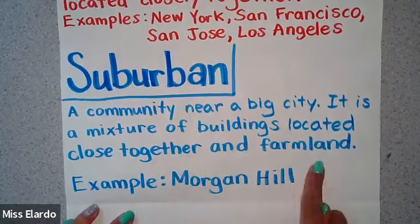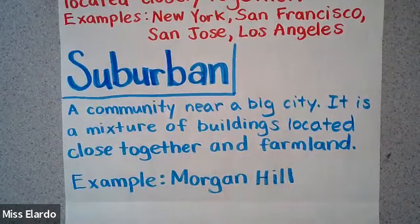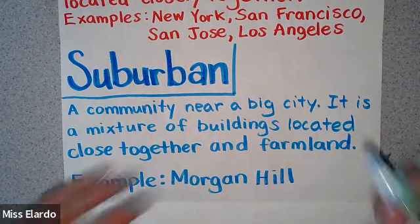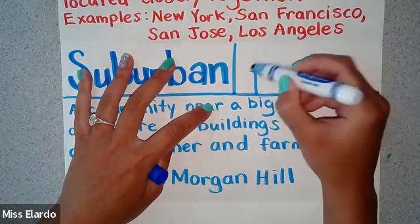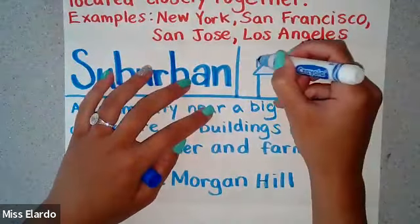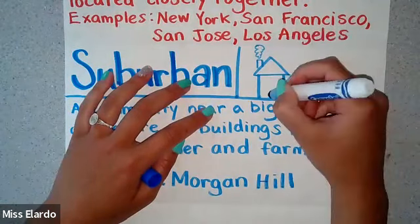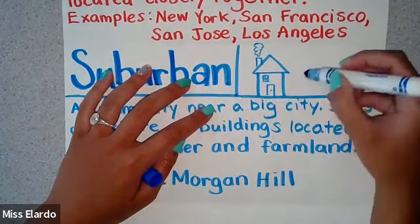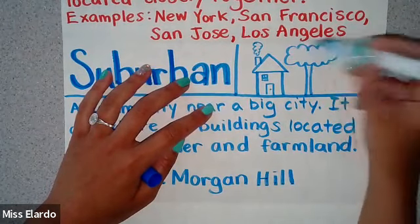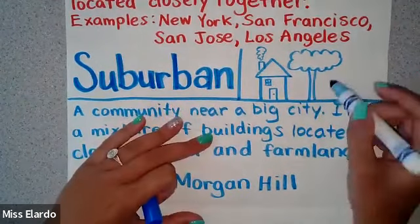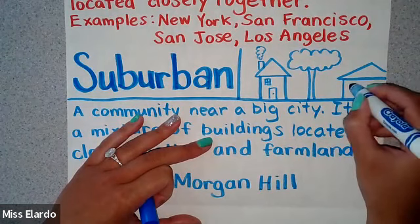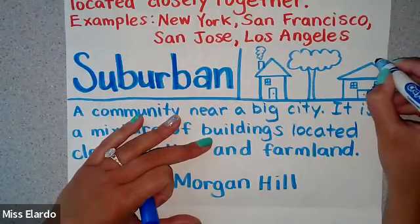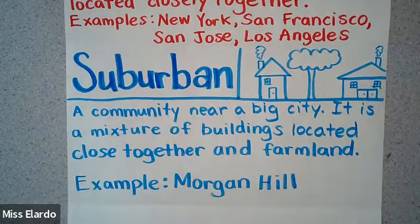That's why I included in the definition that a suburban community does have a little bit of farmland, because in some parts of Morgan Hill there are houses with lots of land, but in other parts there are houses closer together and apartments too. Let me draw my picture. I'm drawing some houses now, because in a suburban community you would find houses. This one's going to have double doors, a window, and a tree. There's my suburban picture.